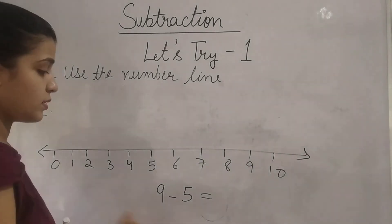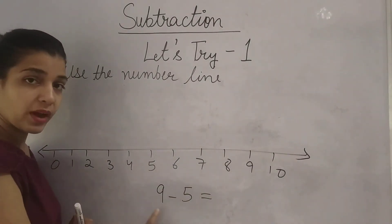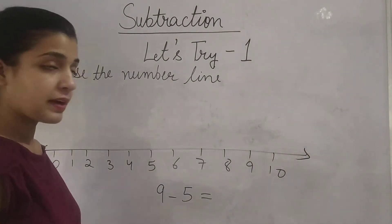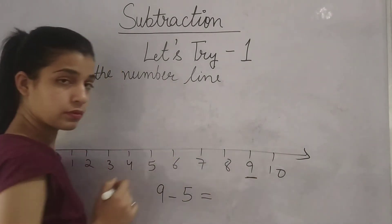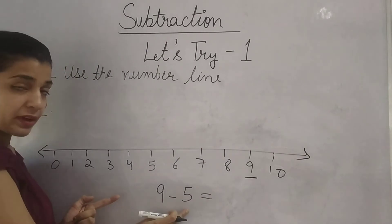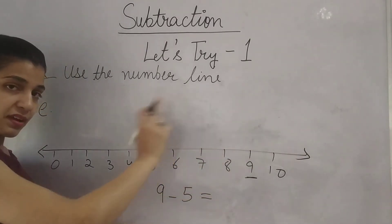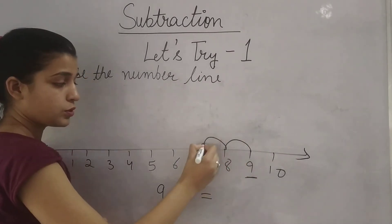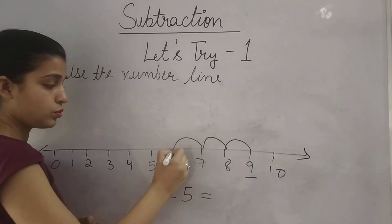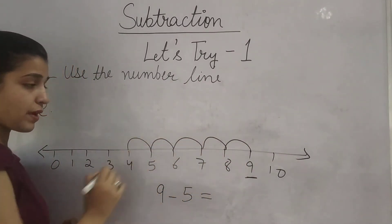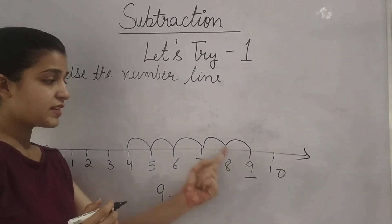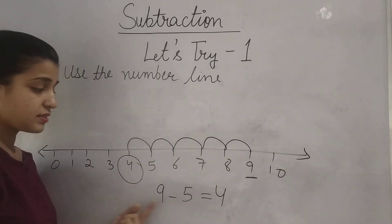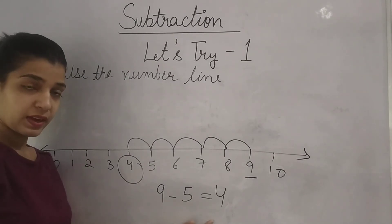Now subtract 5 from 9. Find 9 on the number line — it's here. Go 5 steps back: 1, 2, 3, 4, 5. We came 5 steps back and the answer is 4. So 9 minus 5 equals 4.